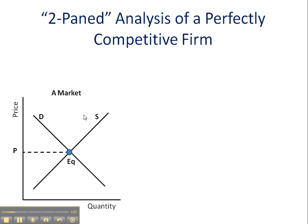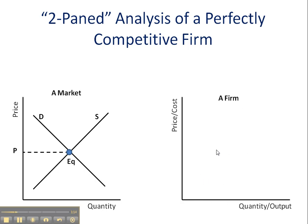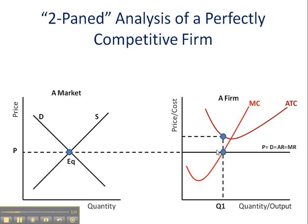A two-paint analysis approach again, with the paint on my left demonstrating a market and the paint on the right demonstrating the firm. Here's my firm operating at an initial loss. Now how do I know that? Remember that the firm is a price taker, so I started off with an initial price of P for the firm. That looks like a perfectly elastic demand curve. You'll note that the ATC curve is well above the demand curve, which immediately should indicate to us that this firm is operating at a loss.